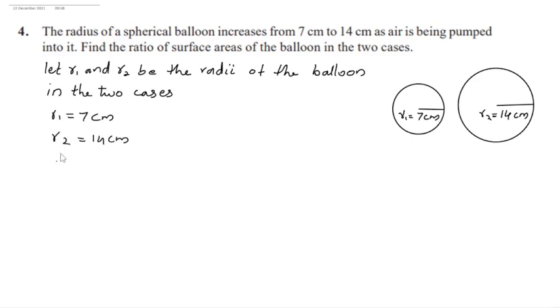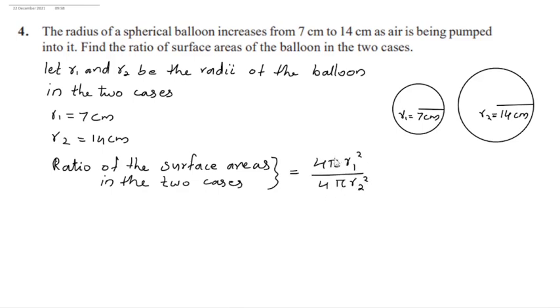The ratio of the surface areas in the two cases is 4πR1² divided by 4πR2². Cut this 4π. Now R1² is 7² divided by R2² is 14².